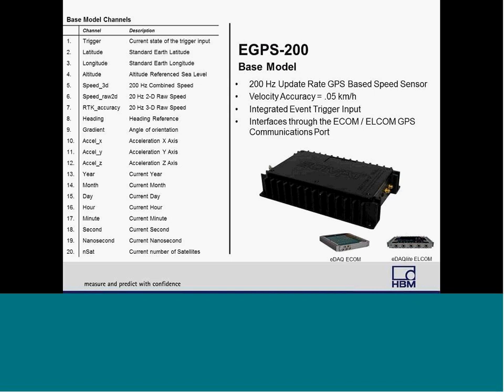The eGPS 200 is an update-rate GPS based on speed sensors that interfaces with and is powered by the GPS port of the eCAM layer. It is a GPS receiver designed for non-contact speed measurement and professional vehicle testing applications, such as braking, acceleration, and general vehicle dynamics. The eGPS 200 module combines data from GPS and inertial sensors to provide maximum reliability and accuracy, even in areas with short interruptions in GPS reception, meaning you will still receive GPS data even if briefly interrupted.